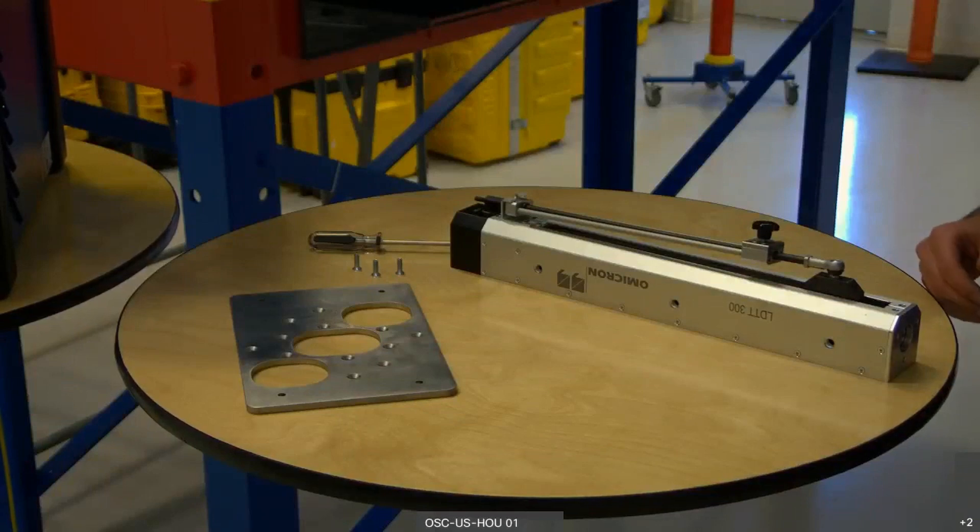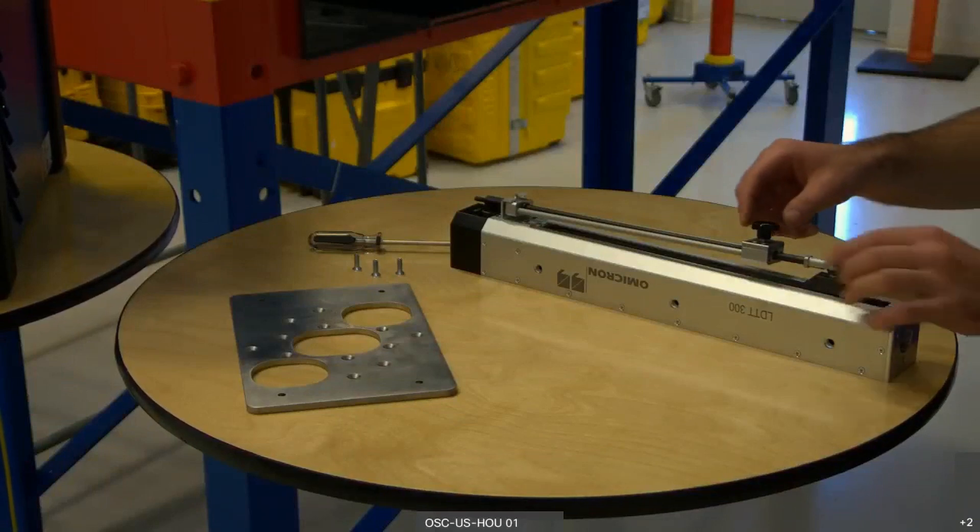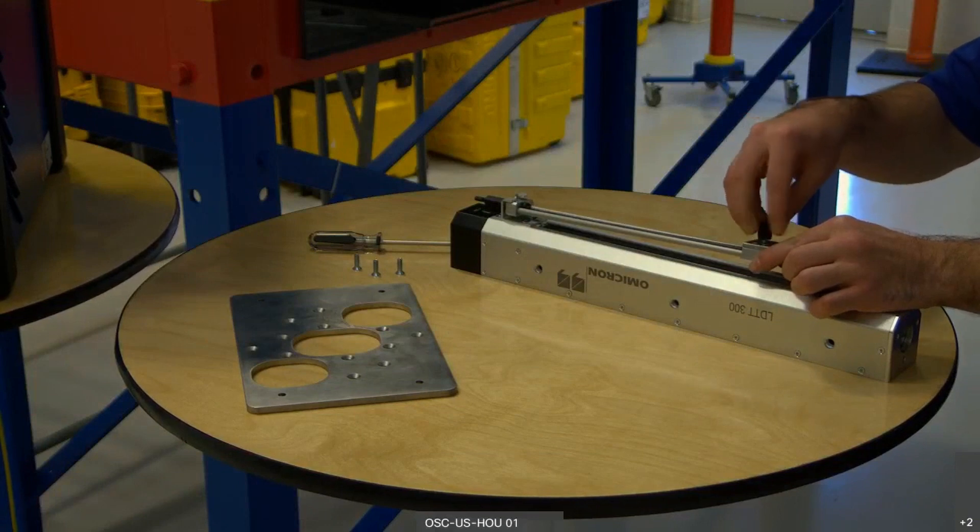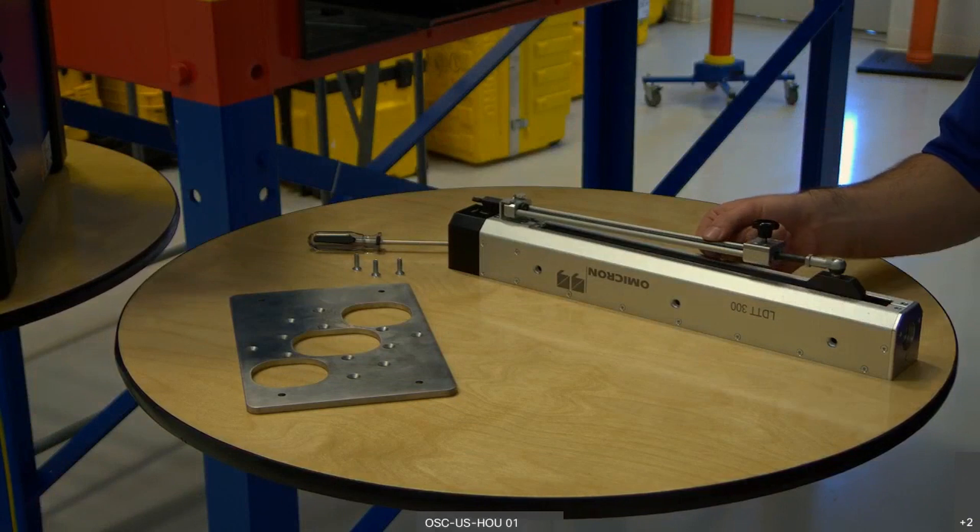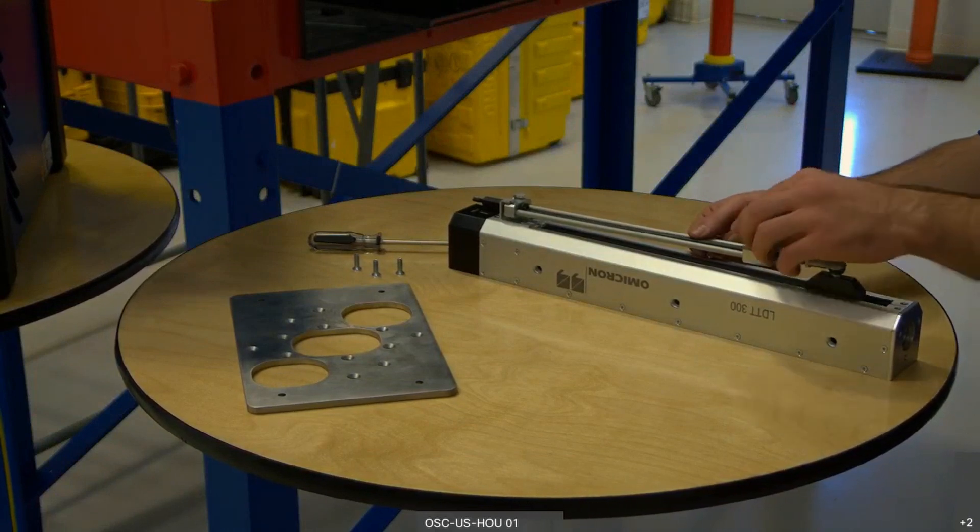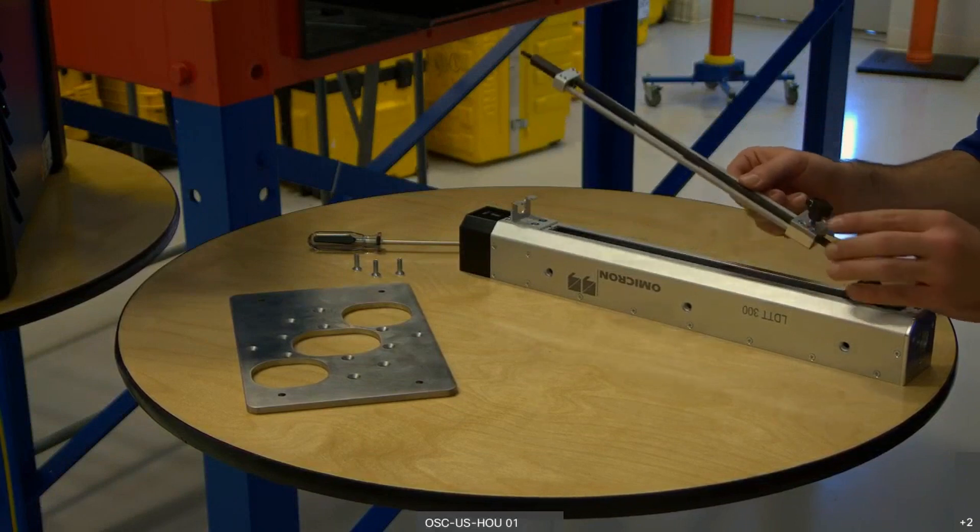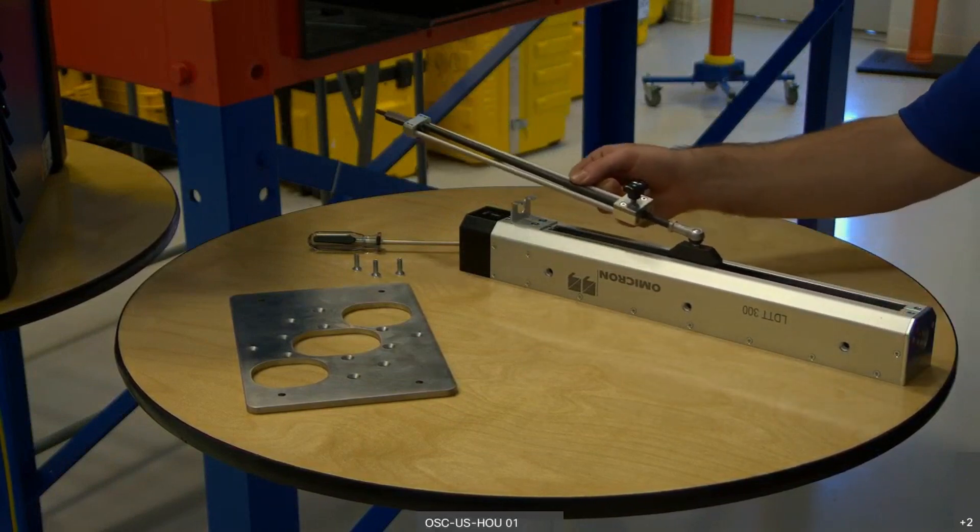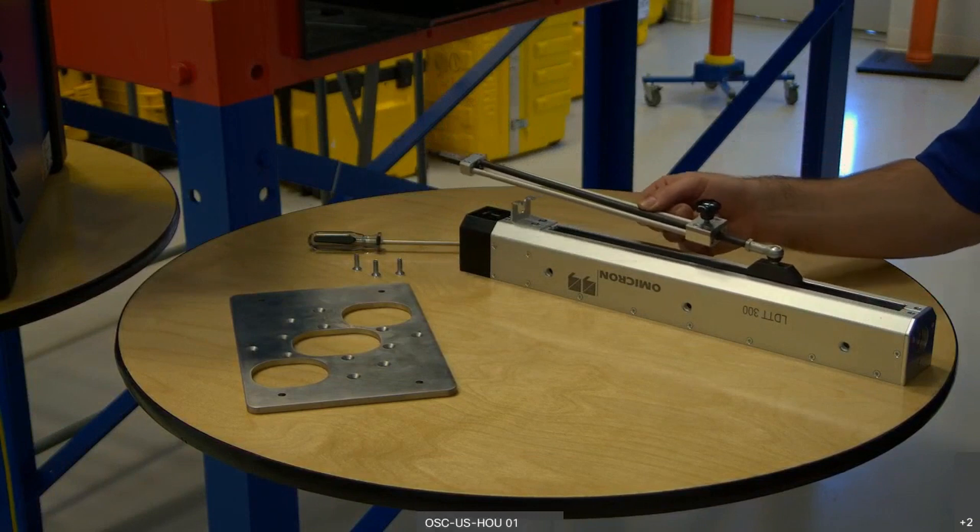So here we have our LDTT 300, and this rod right here is adjustable. The position it's in now is used for transportation so that it doesn't lock out, fall out of this place, and it's locked in. With it now loosened, we can raise it out of this position and move it to the necessary position to connect to the circuit breaker.